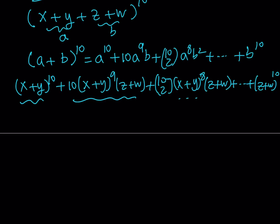For example, x plus y to the 10th power is going to give us 11 terms. If you have x plus y to the nth power, this gives you n plus 1 terms, because it goes from n choose 0 to n choose n — it's just one more than the power. We also have to consider z plus w to the 0 power, which is going to give us one term, and I want to write it as a sum of products because I'm going to use the sigma symbol.